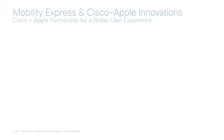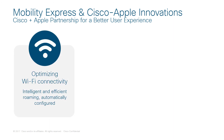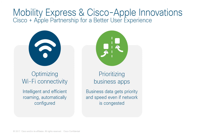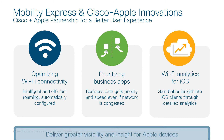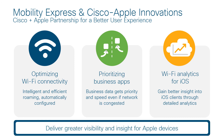One of Cisco's biggest differentiators is the partnership between Apple and Cisco, and Mobility Express fully supports it. Through this partnership, your Apple clients can intelligently roam in your network. You can prioritize business-critical apps and get better insights into iOS clients through detailed analytics, which can significantly help narrow down client issues. Thus, with Cisco Mobility Express, you provide the best experience to your users with Apple devices.